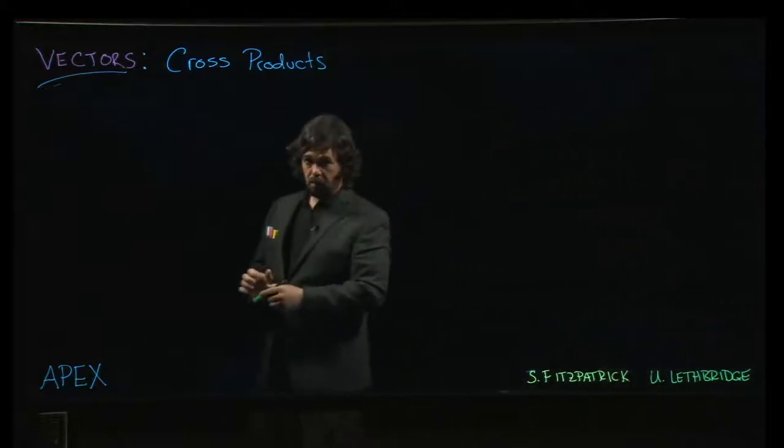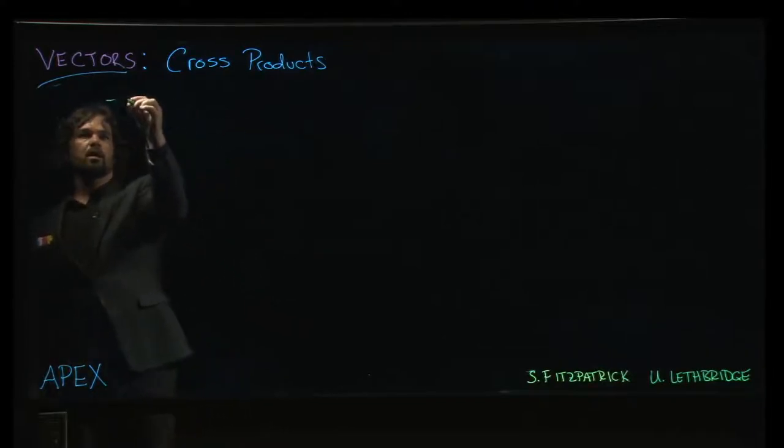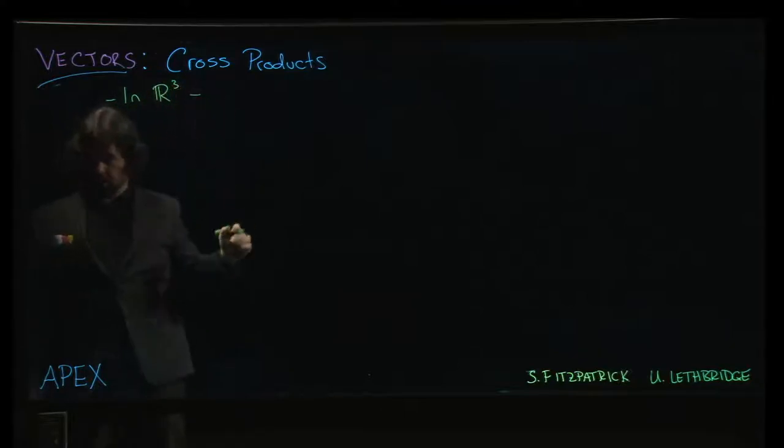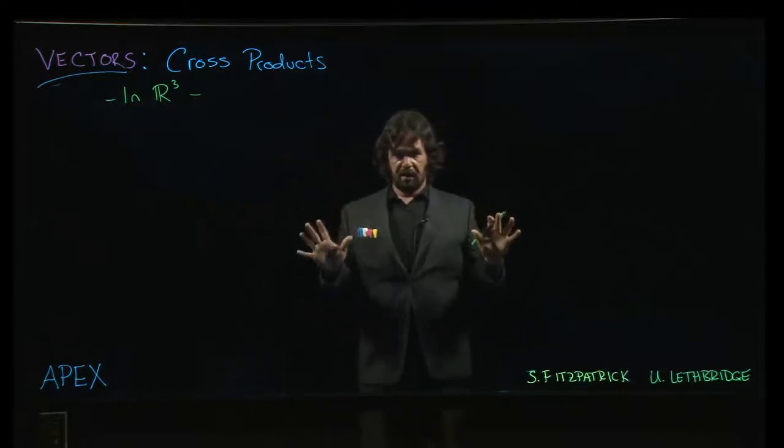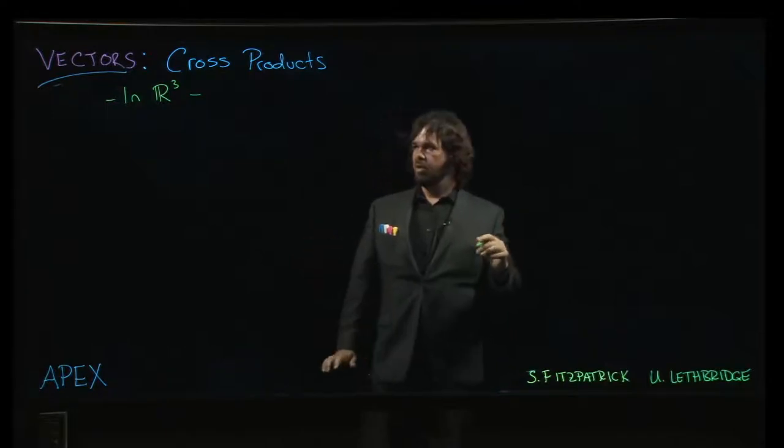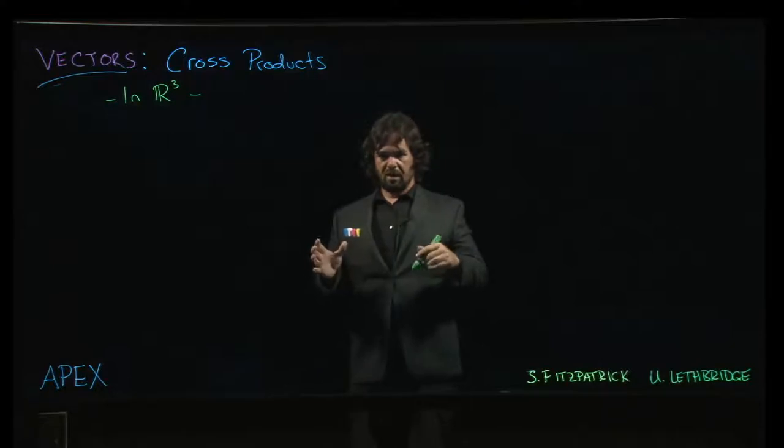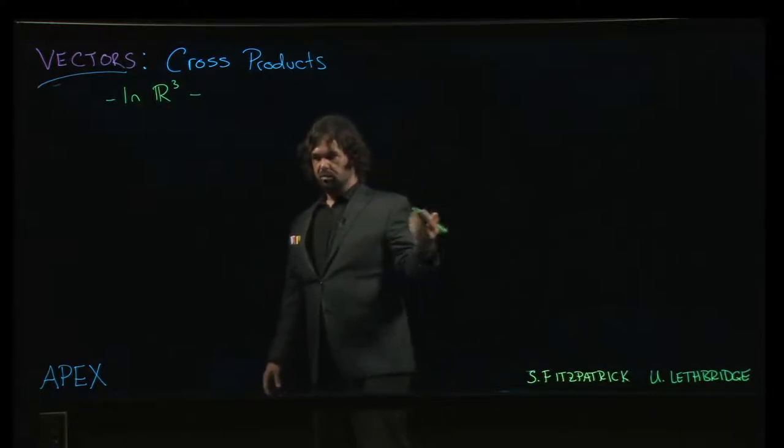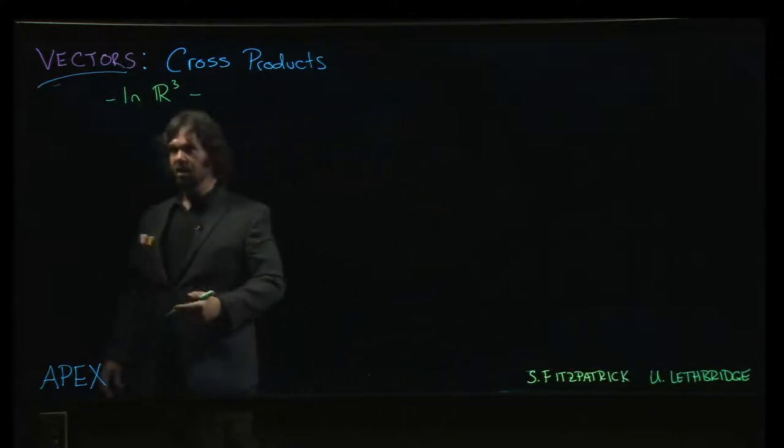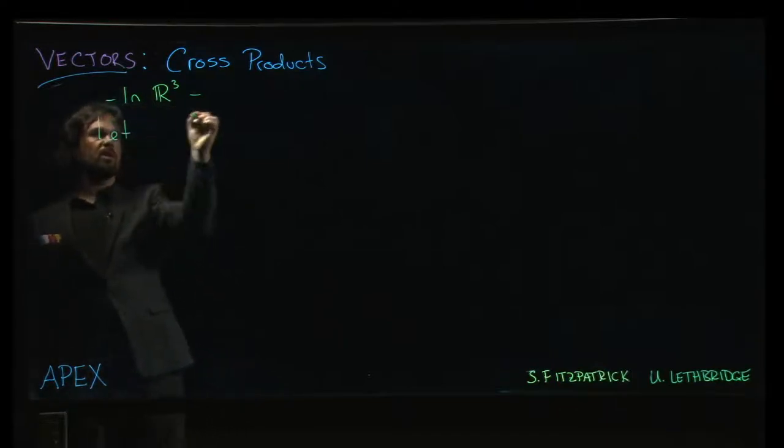Our next topic is cross products. We're going to do everything here in three dimensions. The cross product is something that is inherently a three-dimensional construction. You can sort of do it with two-dimensional vectors if you want to think of a two-dimensional vector as vectors in the xy plane, but sitting inside three-dimensional space. The third component, the z component, is just zero.